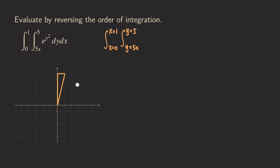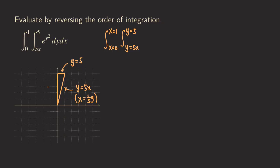It's a good idea to label all three sides of this triangle. This side is given by y equals five x, but we can also write it in a different form by solving for x: x equals one over five times y. Sometimes this can be convenient. The horizontal line is y equals five, and the vertical line is x equals zero. So we've labeled all three sides of the region of integration.